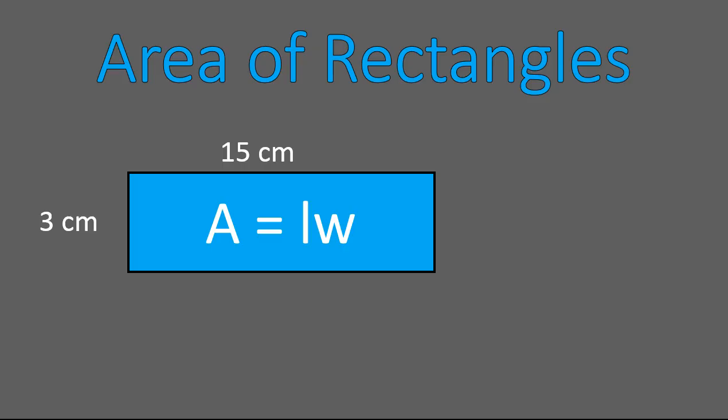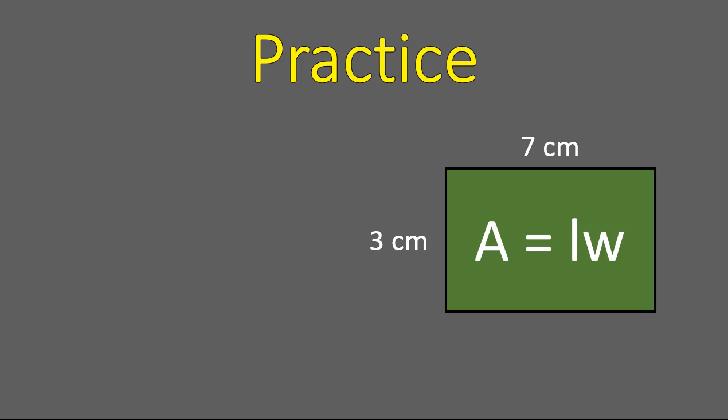Our next part is the area of a rectangle. The area of a rectangle is the length times the width. In our example, we have a rectangle that is 3 by 15, so we do 3 times 15 and get 45 square centimeters. Area of a rectangle is very straightforward — you take the length times the width. Your turn: go ahead and multiply the length times the width and tell me the area of this rectangle.